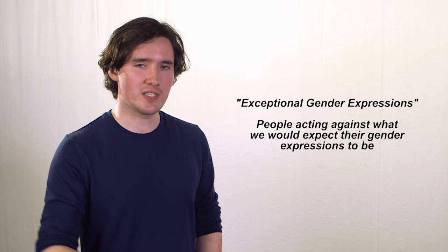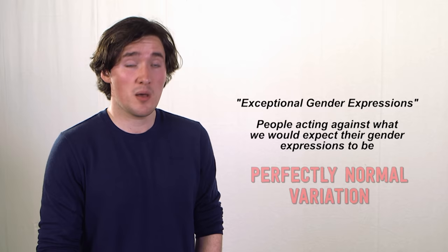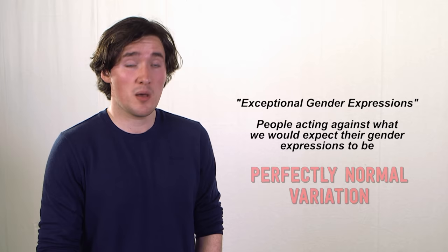The difference between this and the gender essentialist model is that whereas the essentialist would say that the outlying cases are down to genetic errors or anomalies, the intrinsic inclination theorist can say that they're just examples of perfectly normal variation within the human species. Serrano thinks the chief advantage of this model is that it explains both why there are typical cases, most people are in the middle of the bell curves and most people are therefore cis, but also why there are some rarer but still perfectly normal cases.